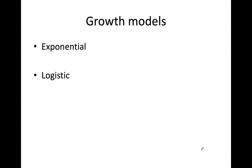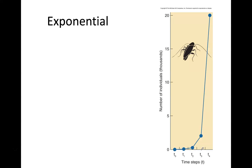We're going to look at two growth models: exponential growth and logistic growth. So first, exponential growth. Exponential growth is what we're seeing here in the graph — growth of generations of cockroaches.